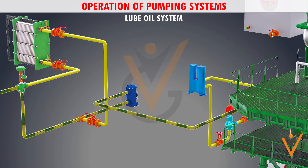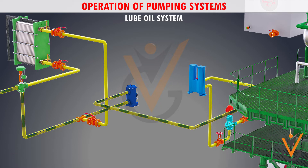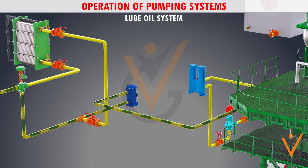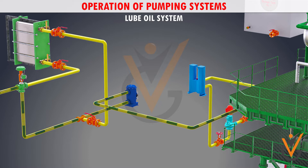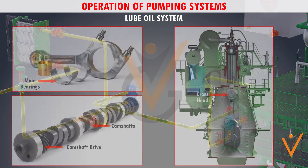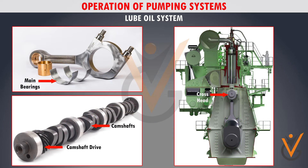An automatic backflushing filter unit with a magnetic core helps to remove any metal debris. The supply pressure in the main lubrication system depends on the design and requirement and is generally around 4.5 bars. The main lube oil system supplies oil to the main bearings, camshaft, and camshaft drive.